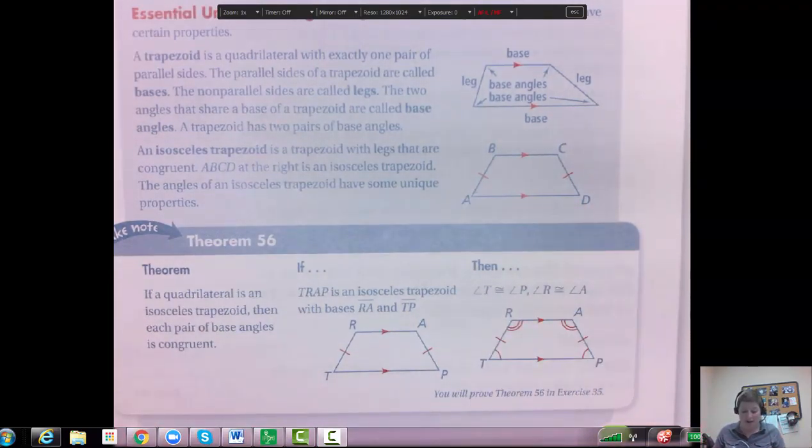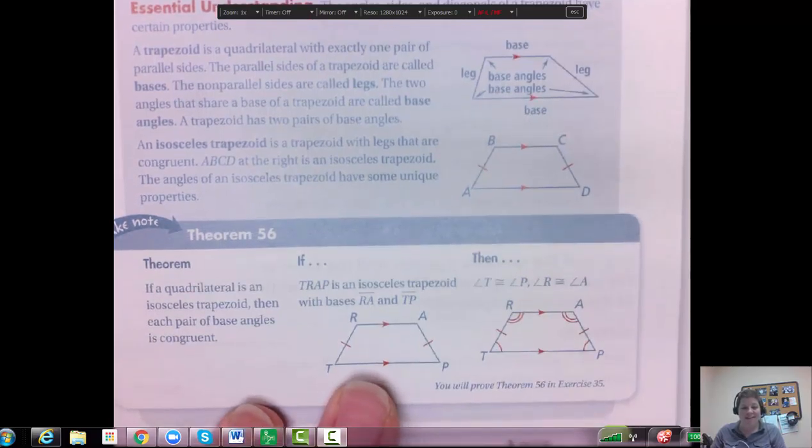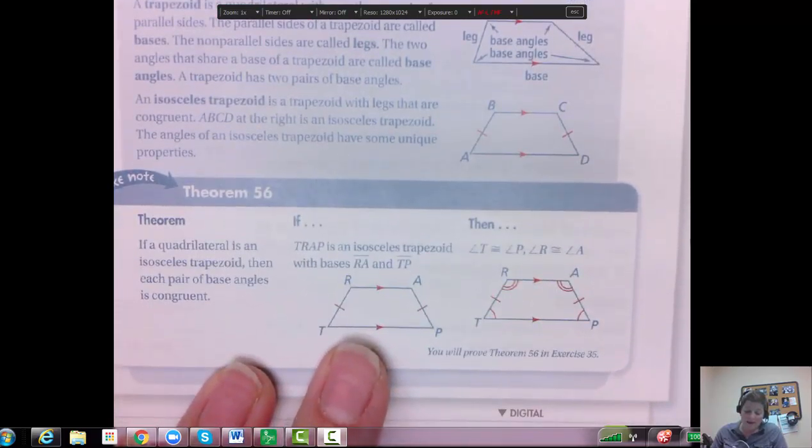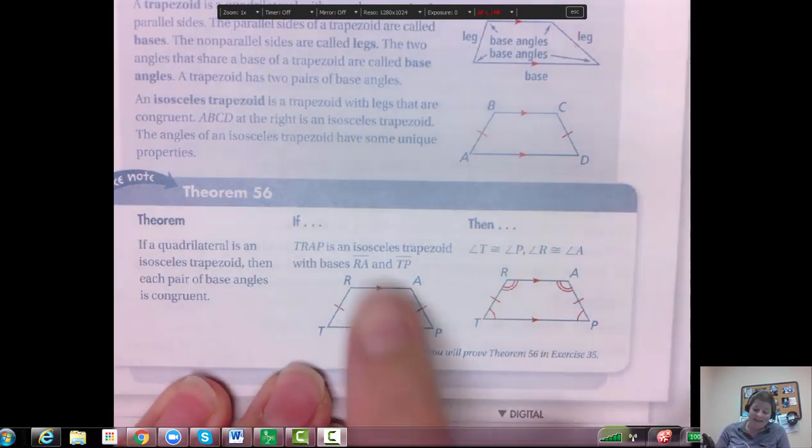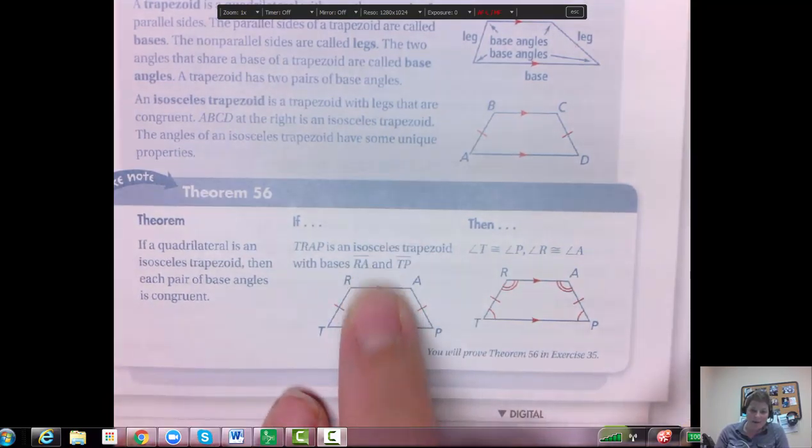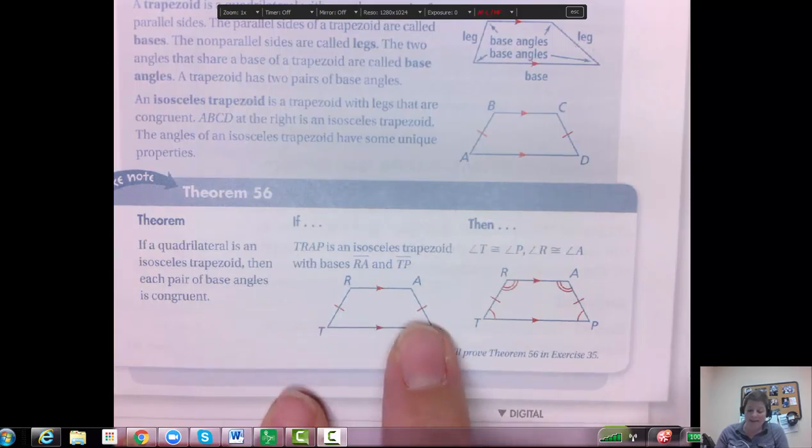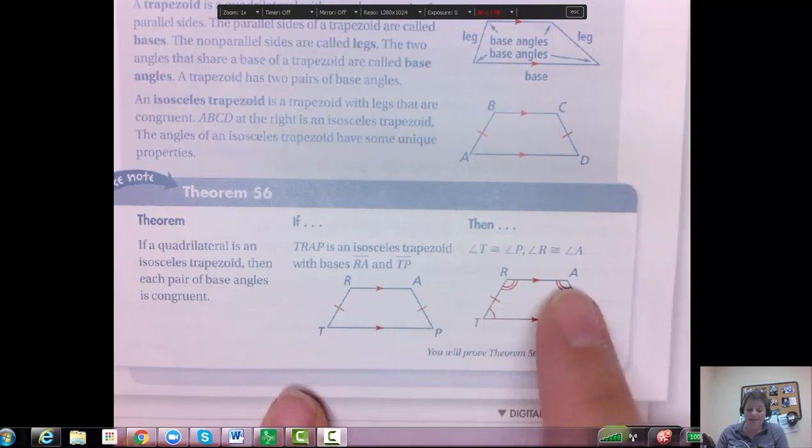Then Theorem 56 in our textbook says, okay, if you happen to have an isosceles trapezoid, so one pair of congruent or parallel sides and one pair of congruent sides, then angles on the base angles on the top and the base angles on the bottom are congruent.